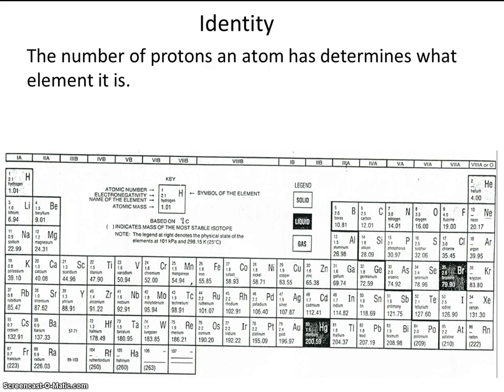Identity. The number of protons an atom has determines what element it is. It's called the atomic number. We can see that hydrogen has one proton. That's its atomic number.